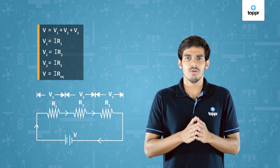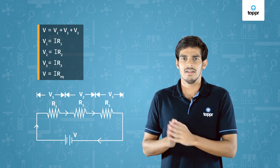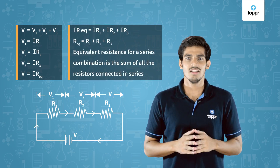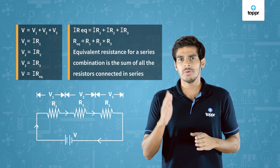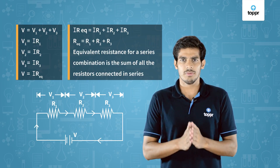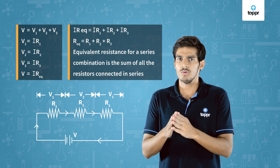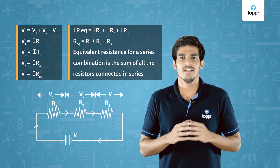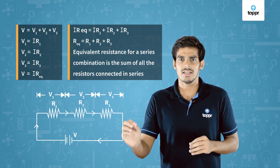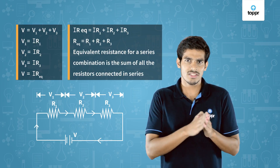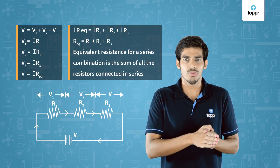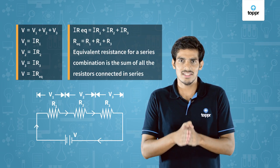Also, V = V1 + V2 + V3, where V is the potential difference of the battery. Let V = I × R_equivalent. Therefore, I × R_equivalent = I×R1 + I×R2 + I×R3, therefore R_equivalent = R1 + R2 + R3. Thus, for a series combination of resistors, the equivalent resistance is equal to the sum of individual resistances connected in series.